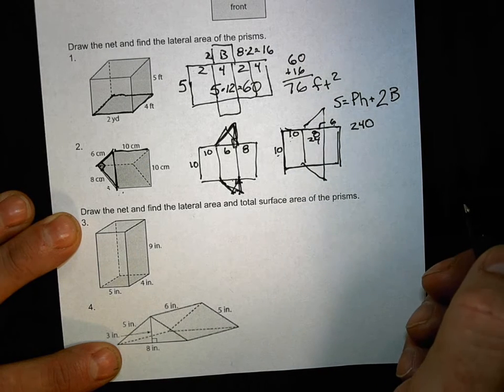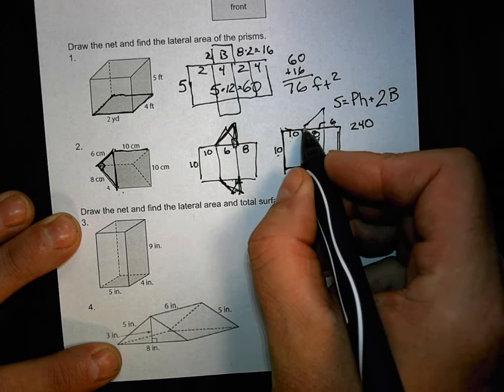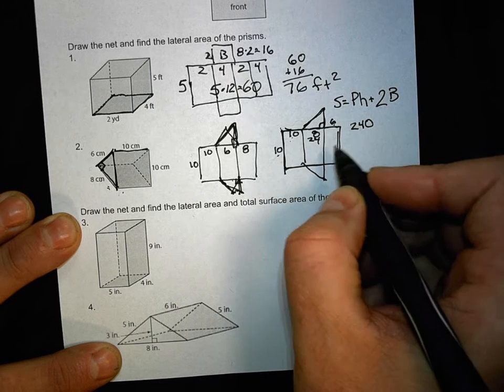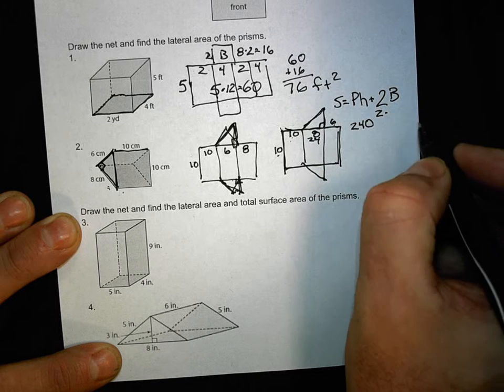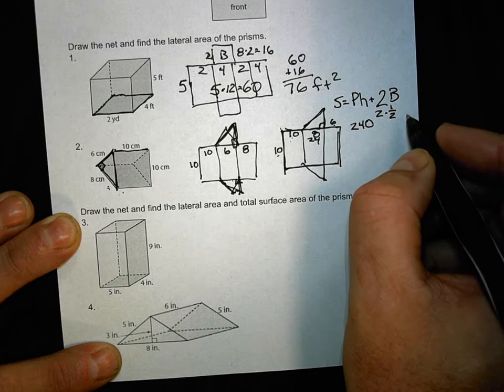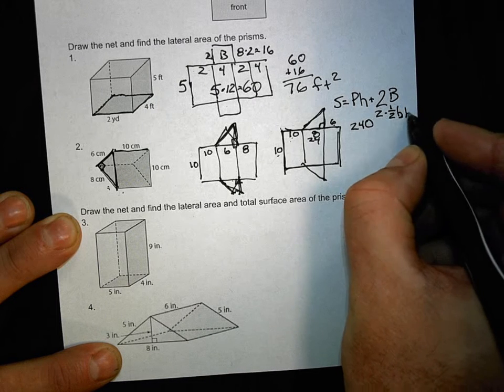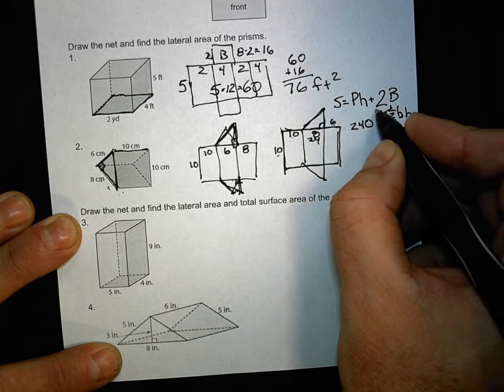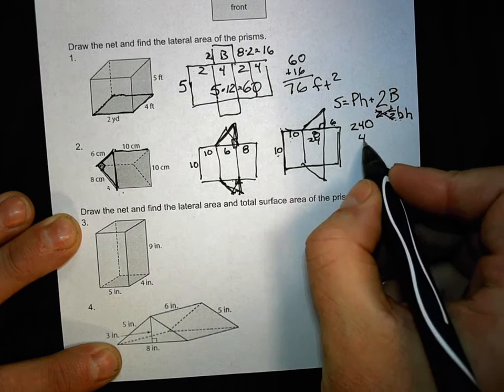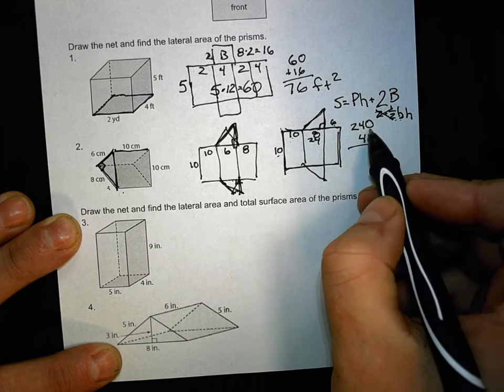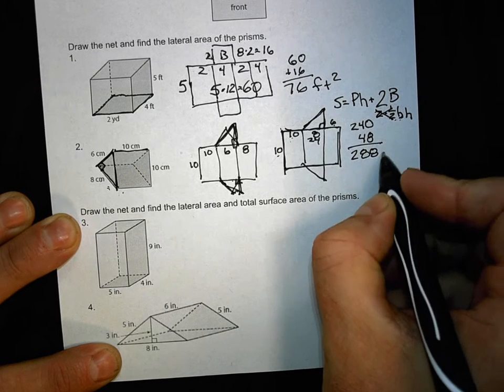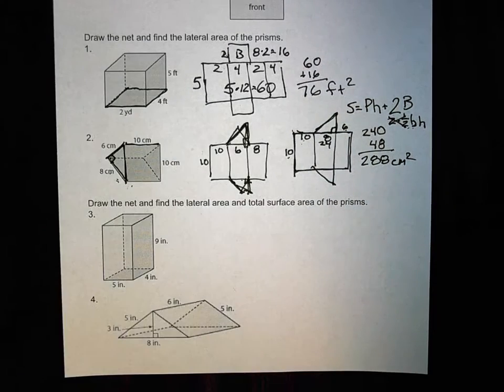Plus two times the area of the base. Well, what's the area of the base? What is our base in this? Triangle. So this is our triangle is our base, so we need to find the area of a triangle. So this is two times, what's the area of a triangle? One half base times height. Now what's two times one half? One. So we can lose that, right? What's base times height? What is eight times six? 48. So that's our perimeter times height plus two times the area of the base. So total is 288 centimeters squared. Does that make sense?